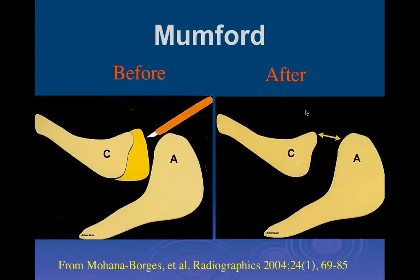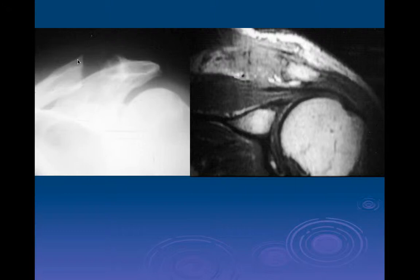He went in and had a Mumford procedure - an open Mumford procedure where they removed the distal clavicle, which relieved the impingement on the supraspinatus muscle and tendon. We can see a nice tendon here, and he was able to go back and play handball after about three months and continue to play handball for about six or seven years beyond that.